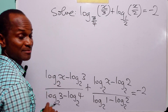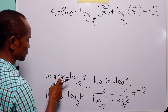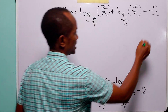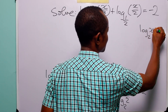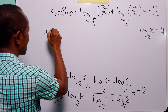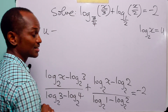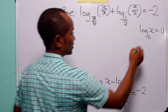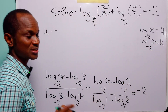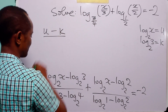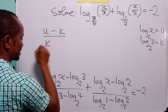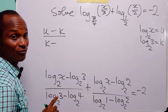Now let us go through these terms one after the other. Here we have log base 2 of x — that is the unknown, what we are looking for. So let log base 2 of x be equal to u, for unknown. So we have u minus log base 2 of 3. This cannot be further simplified, so let log base 2 of 3 be equal to k, for constant. So here we have k. In the denominator we have k minus log base 2 of 4.